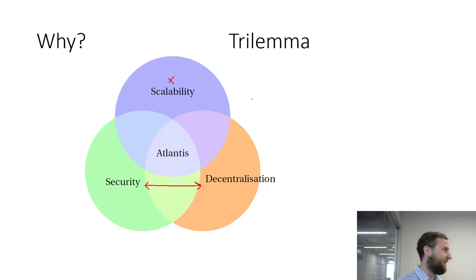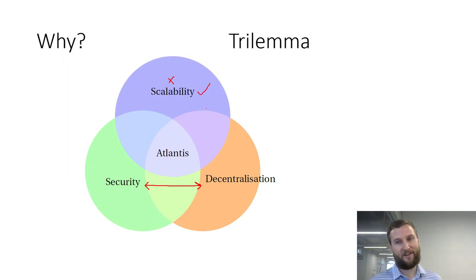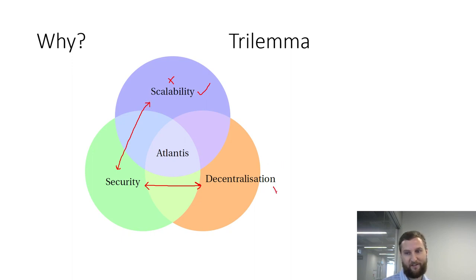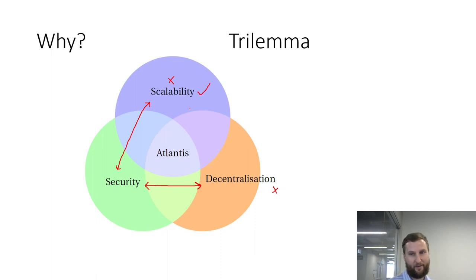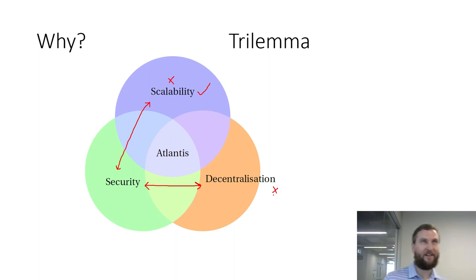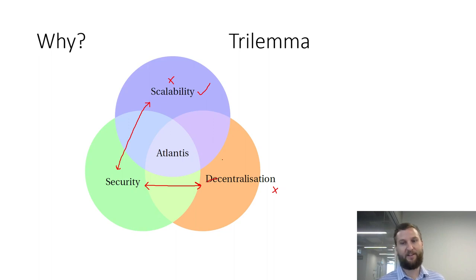If we choose security and decentralization as priorities, then scalability suffers. When you need a million or ten million users, that's where scalability comes in. If you then prioritize scalability, security seems like an obvious must-have, so you end up sacrificing decentralization. So far this is how these things have worked — enhance scalability and you sacrifice some decentralization, or it gets a little more centralized.